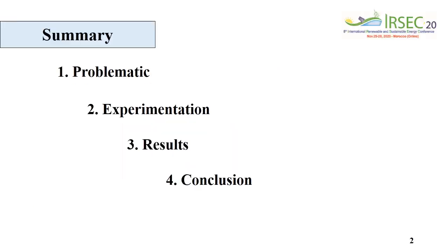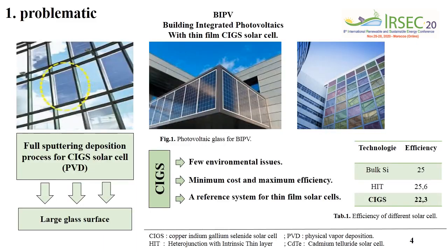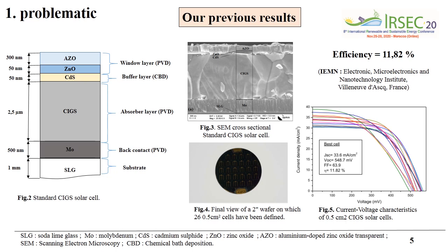Figure 1 shows an example for Building-Integrated Photovoltaics, sputtering deposition, and large glass surfaces. We chose the CIGSe technology because it is a reference system for thin-film solar cells. It presents few environmental issues and has 22–23% efficiency.